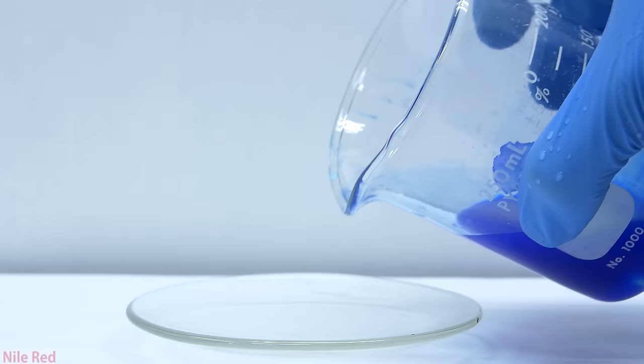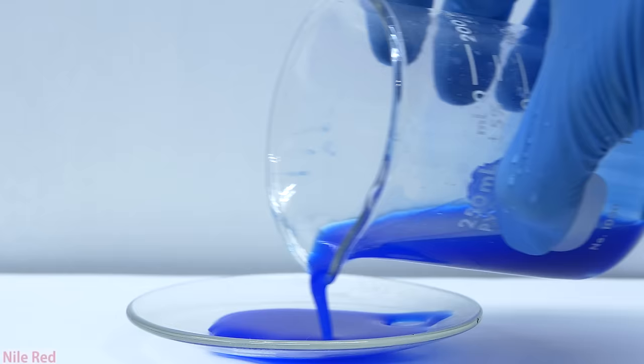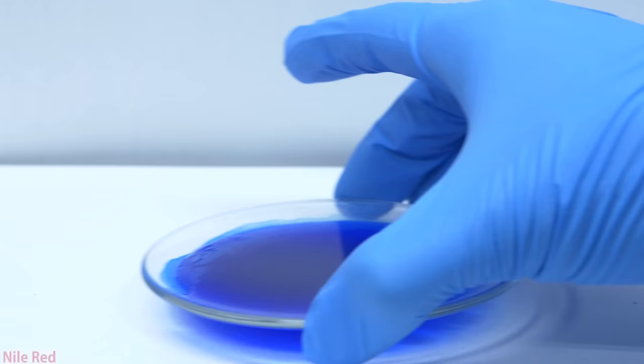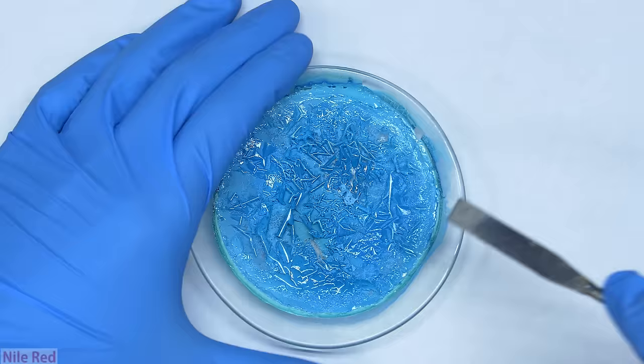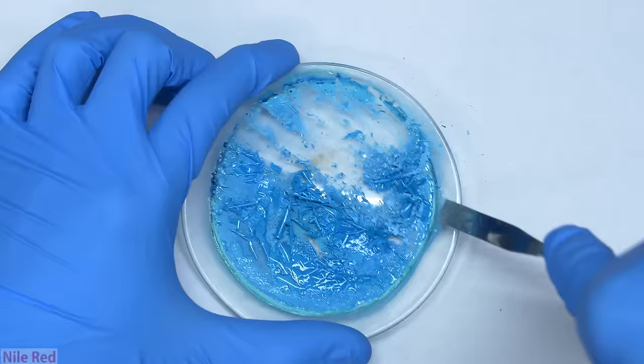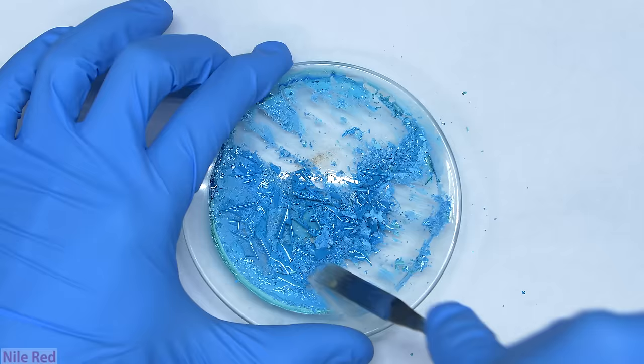As just one final test, I prepare some fresh Schweitzer's reagent, I dissolve some cotton in it, and I pour it out onto a watch glass. What I'm trying to test here is to see what we're left with if we let the solution completely dry out. As the solution evaporates, so does the ammonia, and our Schweitzer's reagent complex slowly falls apart. Because of this, when everything's fully dry, we're left with an intimate mixture of copper hydroxide and cellulose.